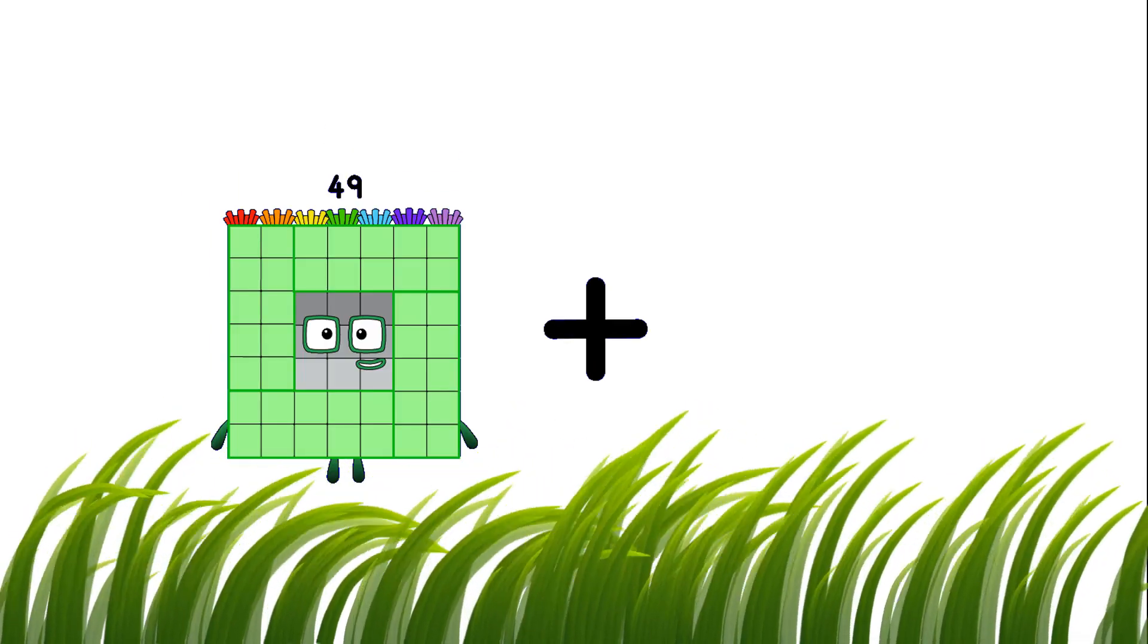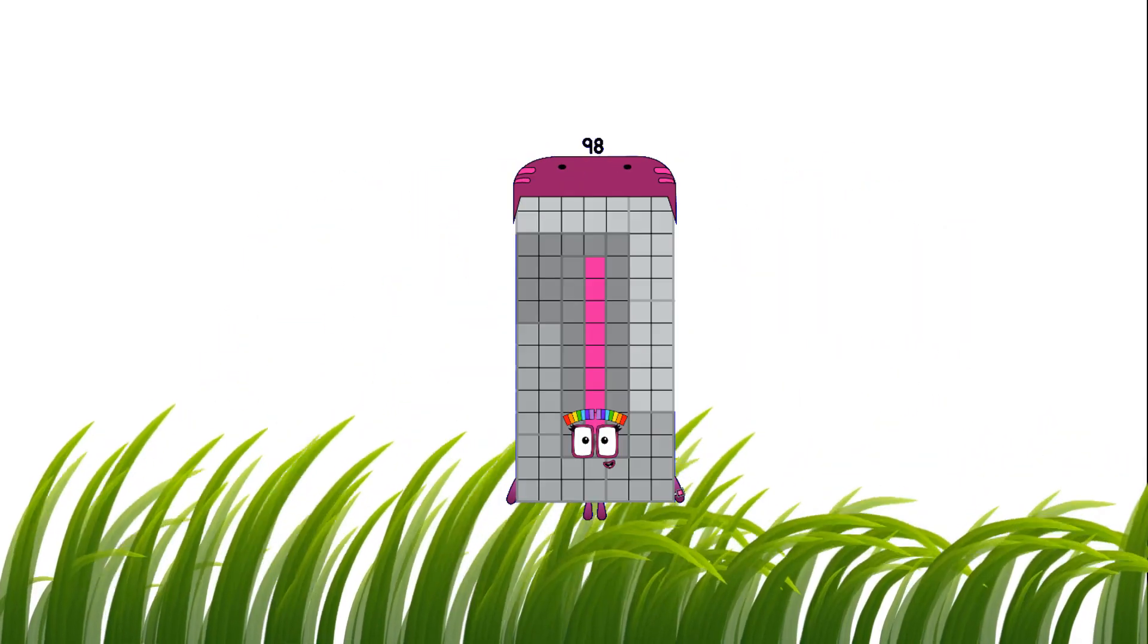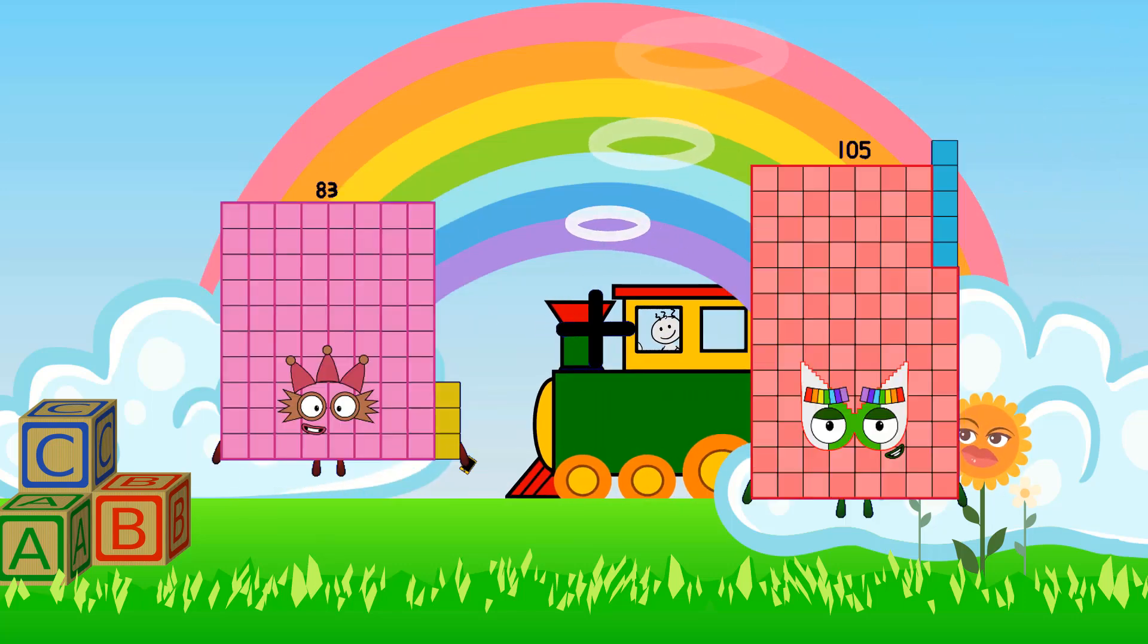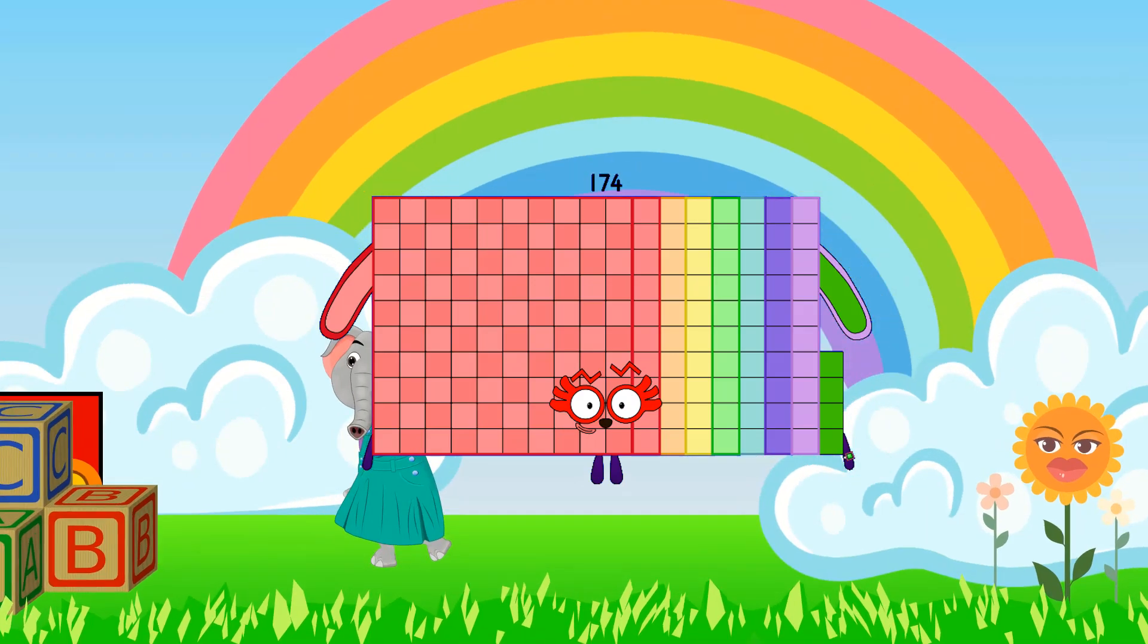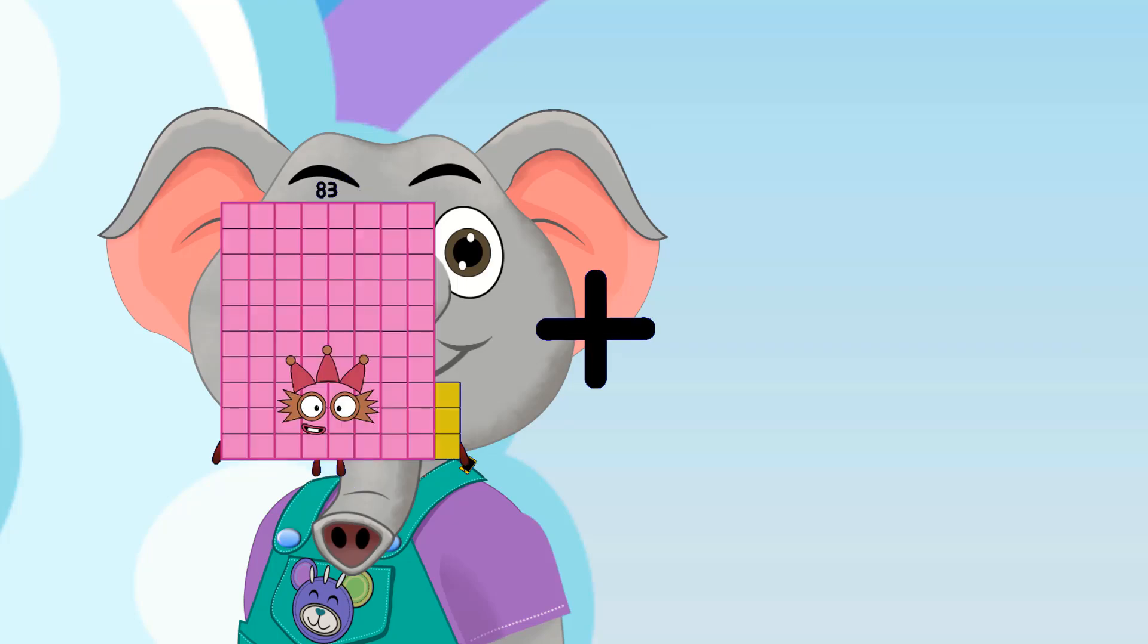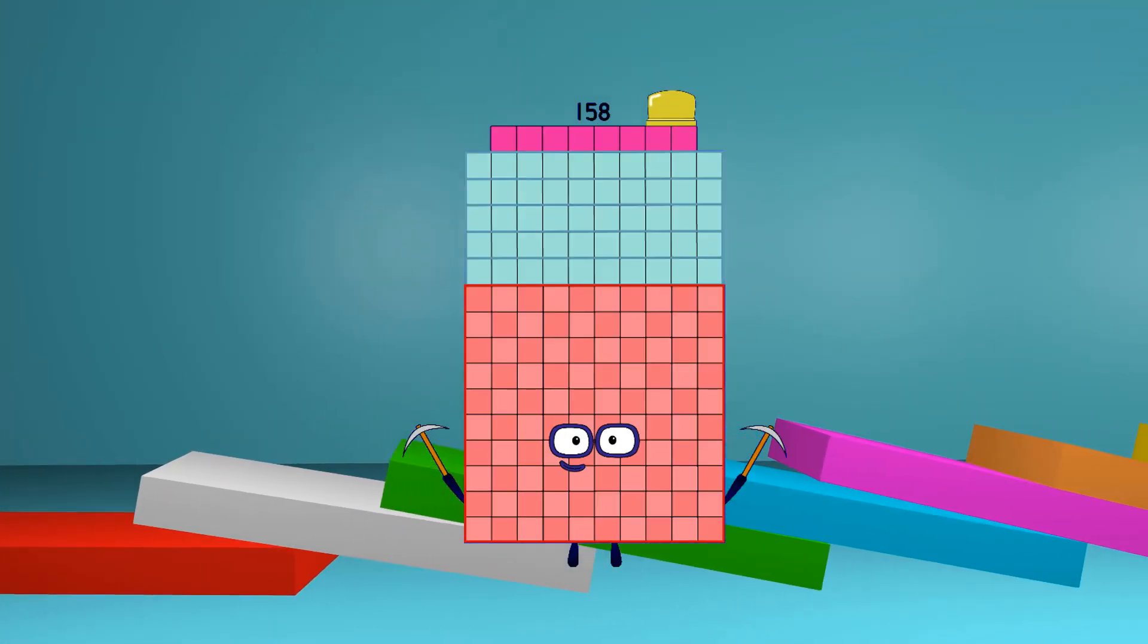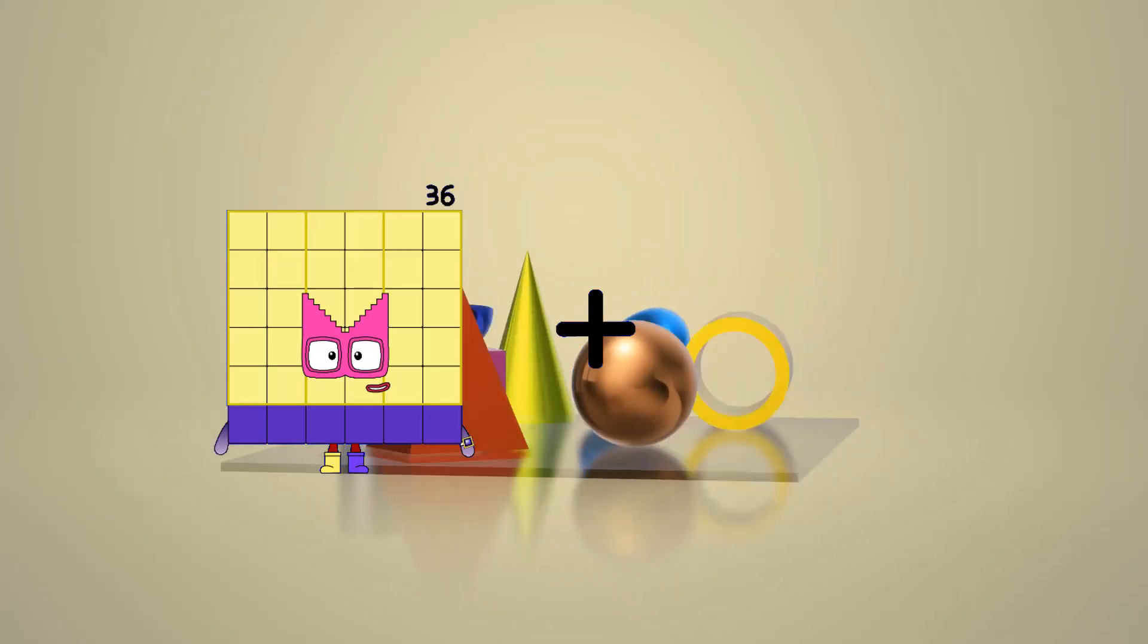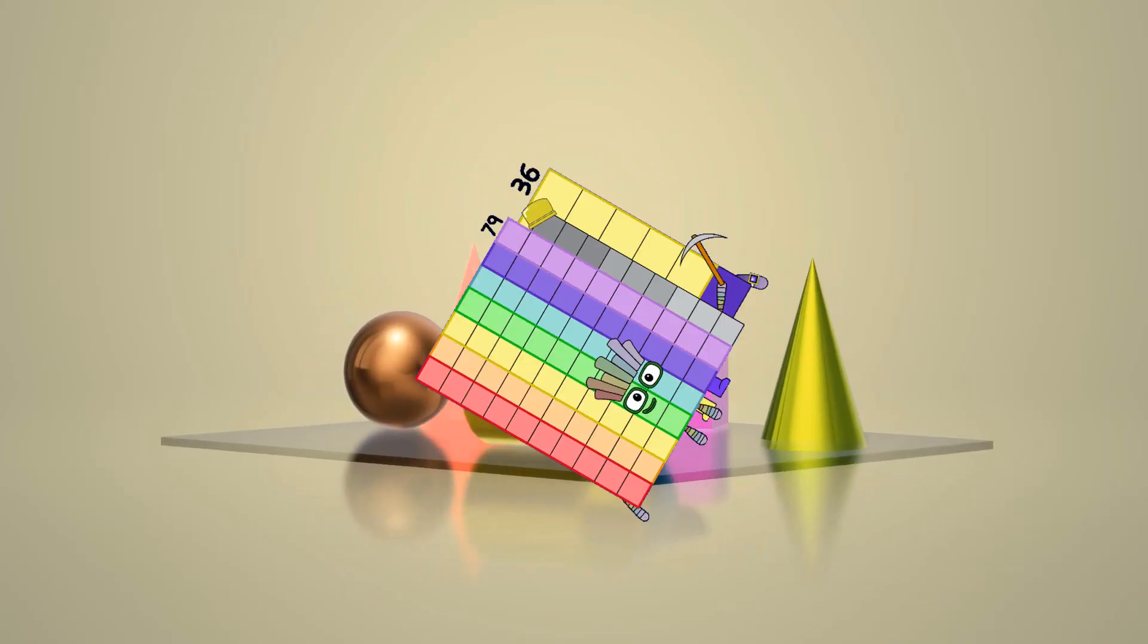49 plus 49 equals 98. 83 plus 91 equals 174. 83 plus 75 equals 158. 36 plus 79 equals 115.